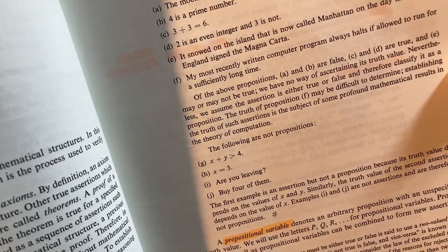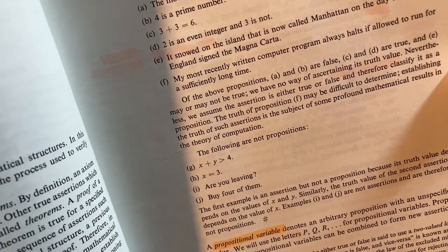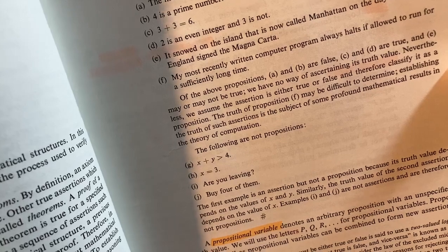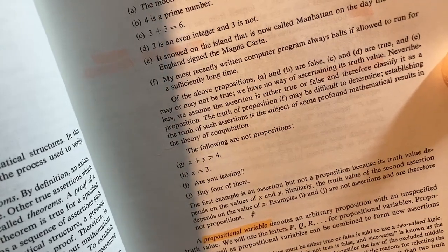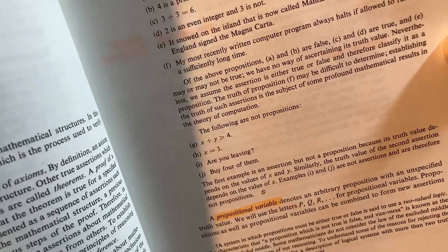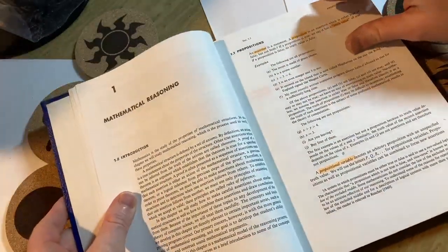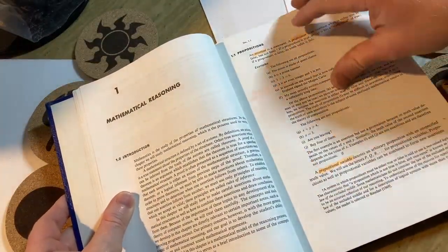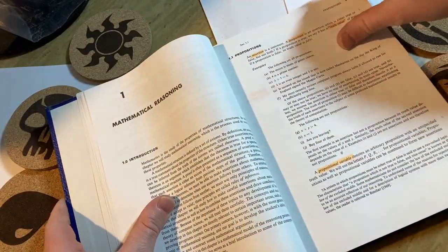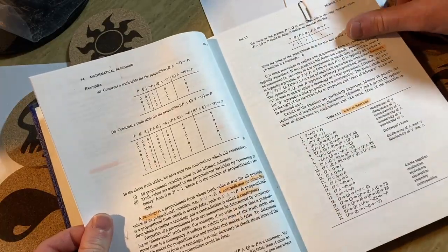The first example is an assertion, but not a proposition, because its truth value depends on the values of x and y. Similarly, the truth value of the second assertion depends on the value of x. Examples i and j are not assertions and are therefore not propositions. Are you leaving? Buy four of them. That's not true or false. So it explains everything quite well and explains why those are not propositions. I thought that was a pretty good explanation.